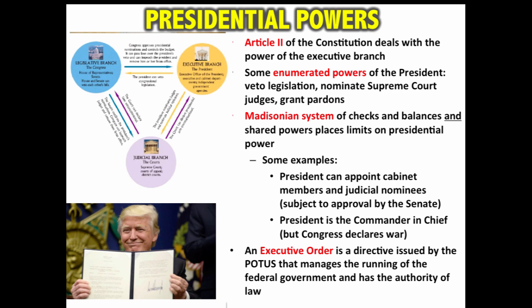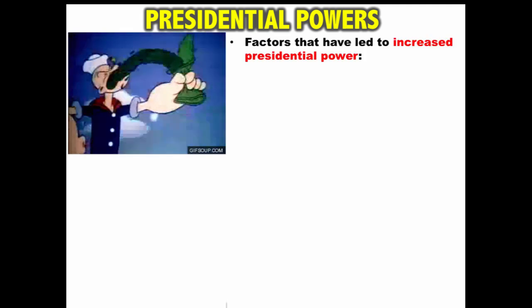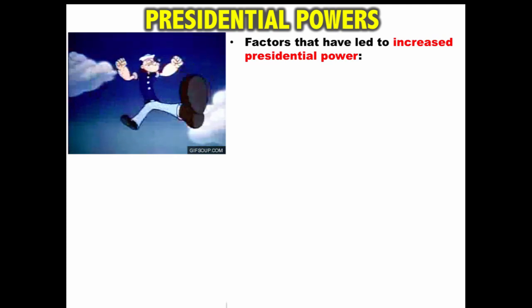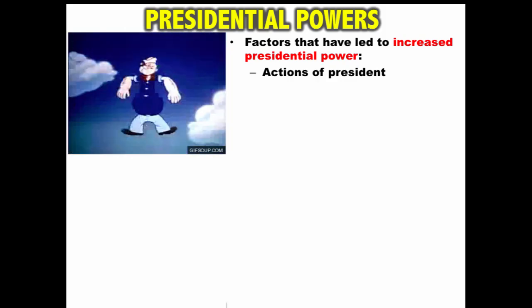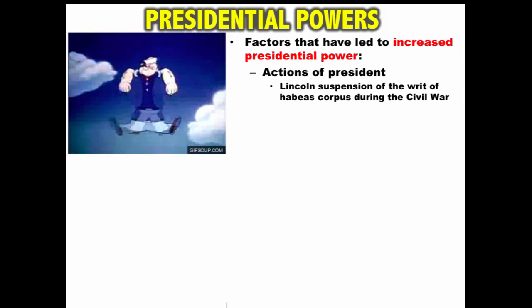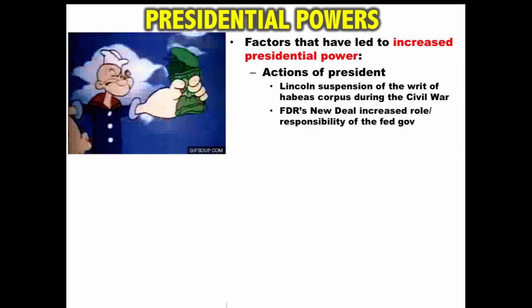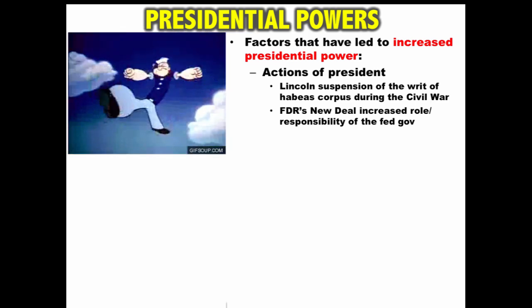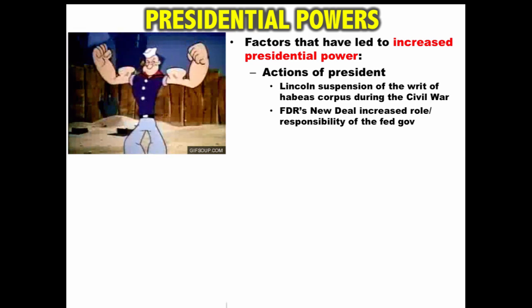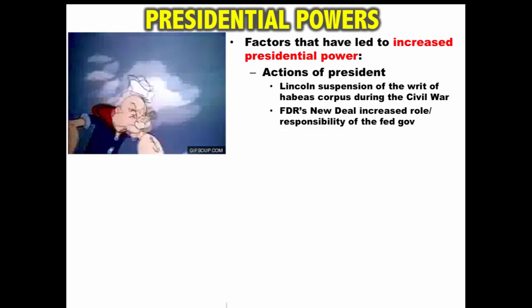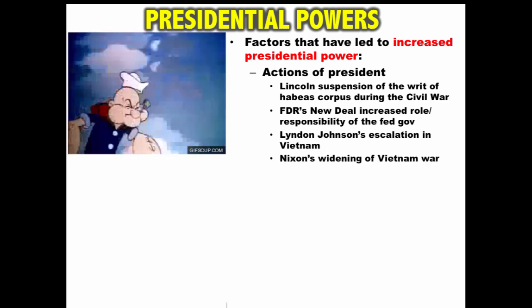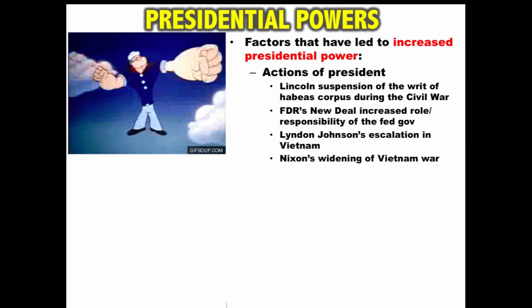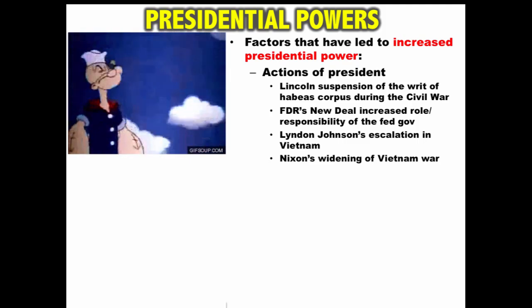The power of the presidency has increased over time, and there are factors that have led to this. Individual presidents have done things that increased the power of their position. Lincoln suspended the writ of habeas corpus during the Civil War. FDR's New Deal increased the role and responsibility of the federal government, and although New Deal programs were passed by Congress, it was Roosevelt's leadership that ushered in this tremendous change. The powers of the presidency were further increased during the Johnson administration as he escalated U.S. involvement in Vietnam following the Gulf of Tonkin, and Nixon widened the war to include the bombing of Cambodia.